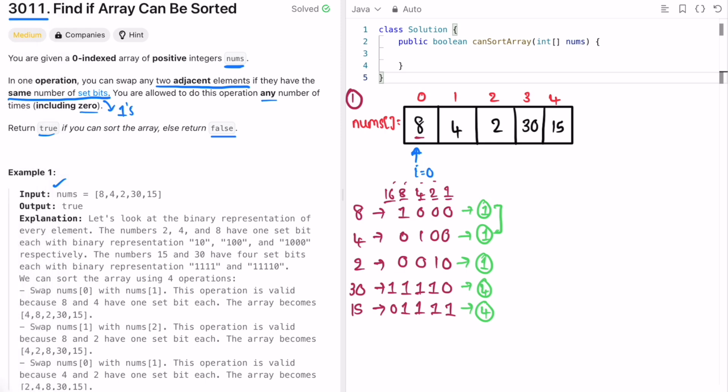Now one more important thing is that you can swap any two adjacent elements and we have to sort the array. This gives an indication that it is similar to bubble sort, because in bubble sort you compare two adjacent values and then swap those positions.